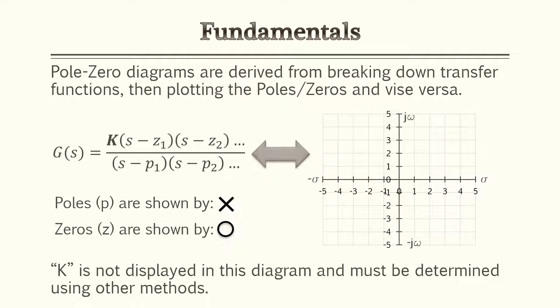The gain K is not displayed on these diagrams and must be determined using other methods. When we get into the Root Locus method, we'll show more on how to determine if K is increasing or decreasing, but for this lesson we'll be focusing mostly on the pole-zero diagrams themselves.